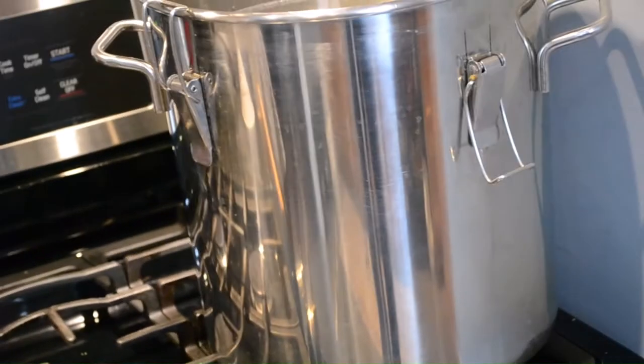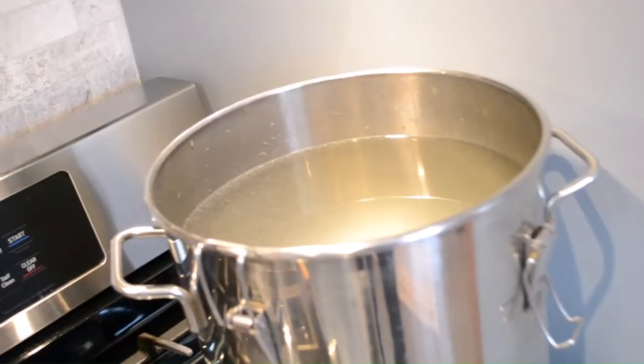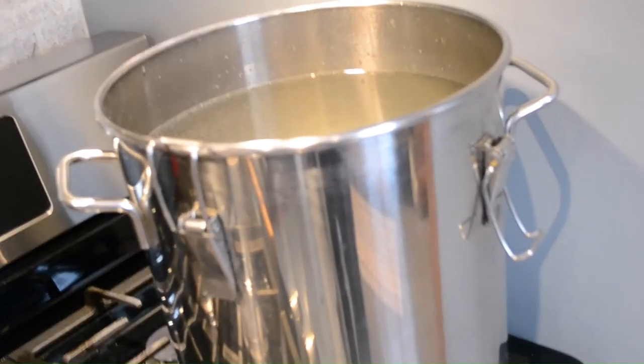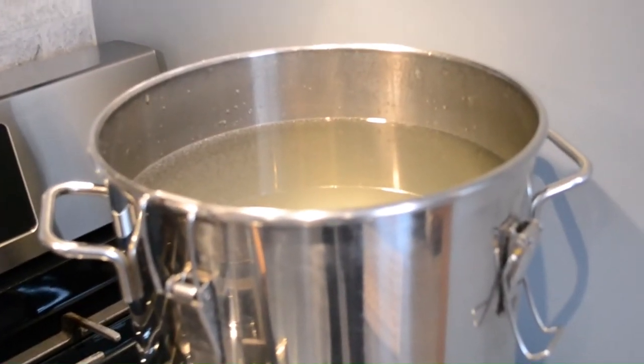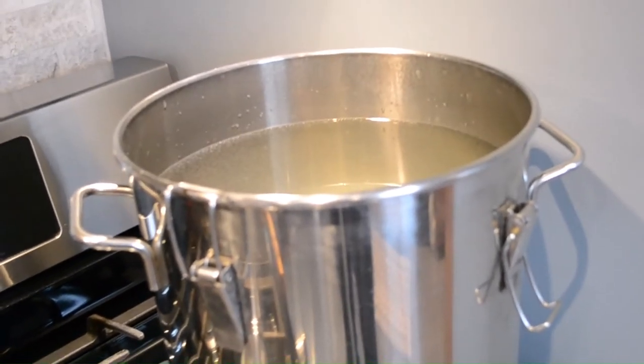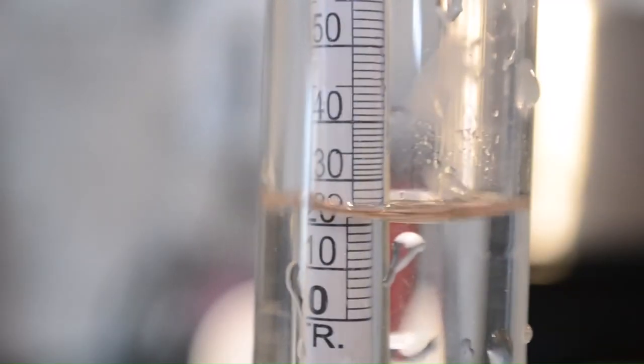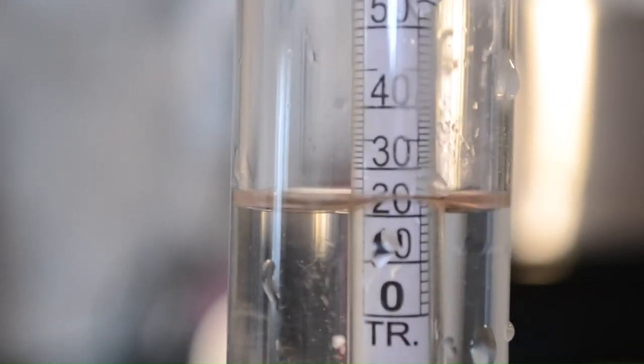I got my pot on the stove and I filled it up with the liquor that I got from my stripping runs. It's pretty full - it looks like about 18 liters of liquor I got out of that. Now I'm going to verify the alcohol content. It'll give me an idea of what my yield is going to be during my spirit run. I put a sample of the liquor from my stripping runs into the sample tube here.